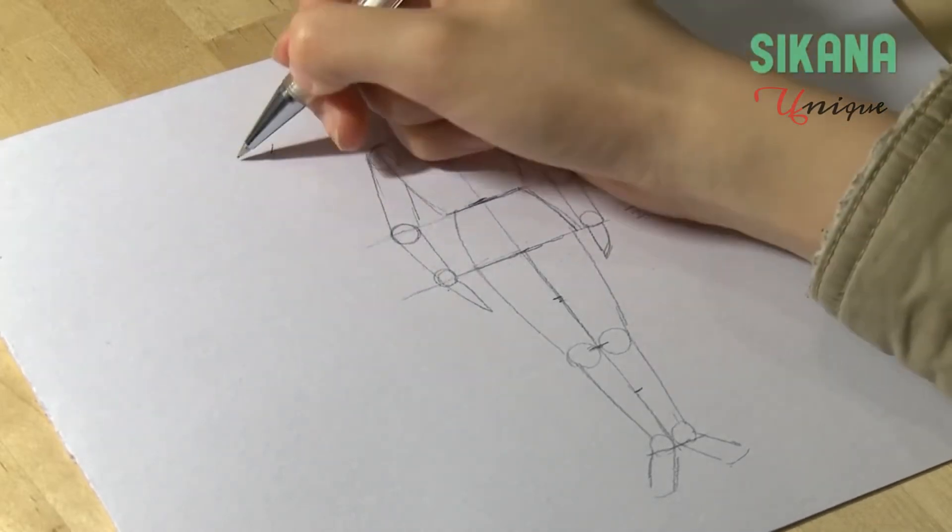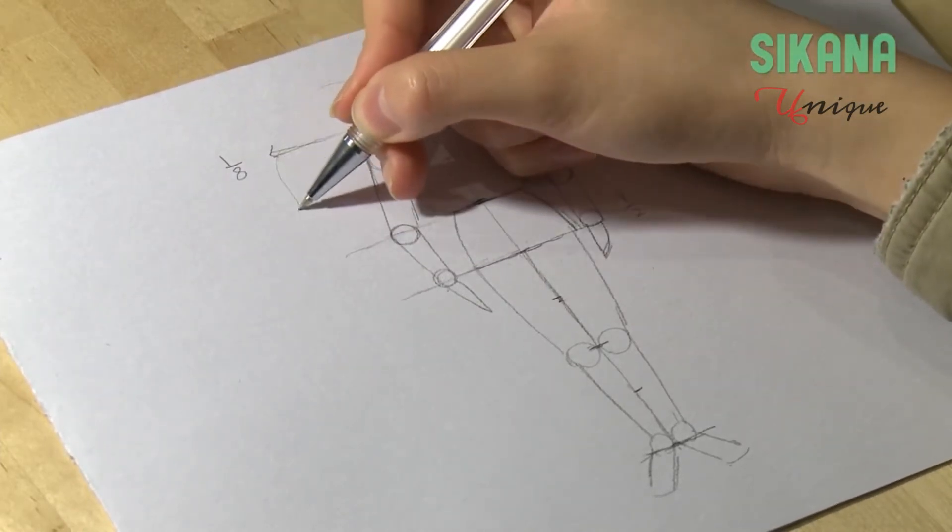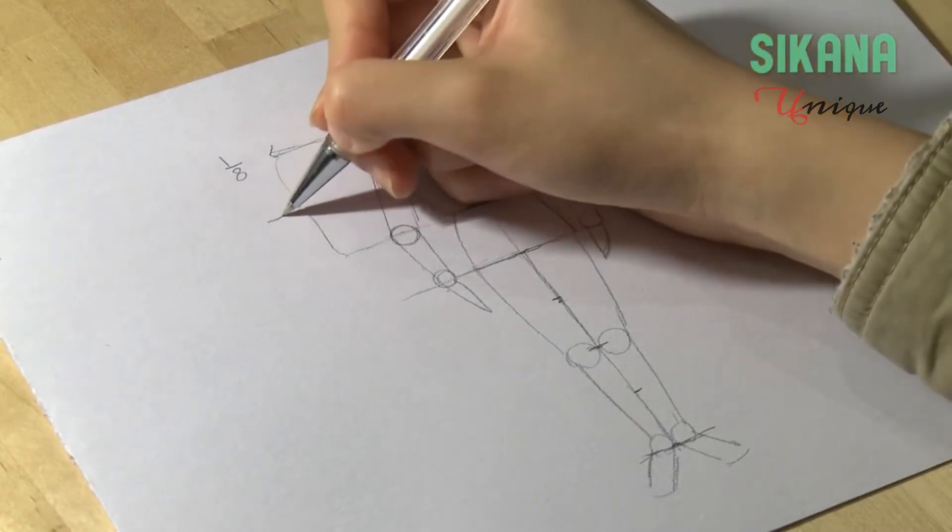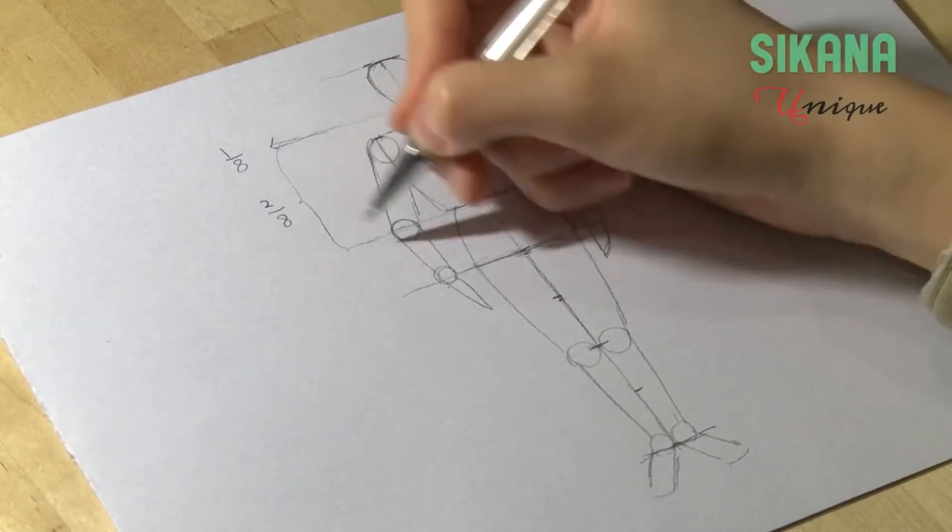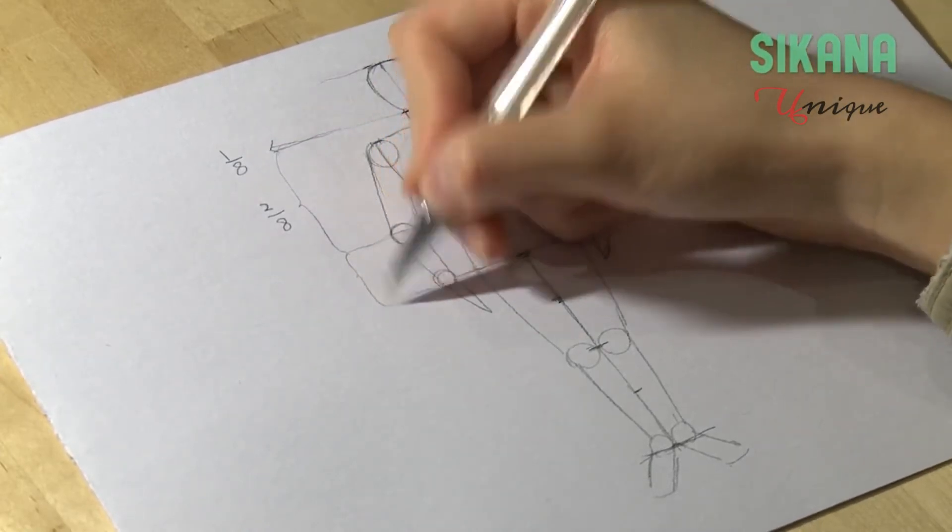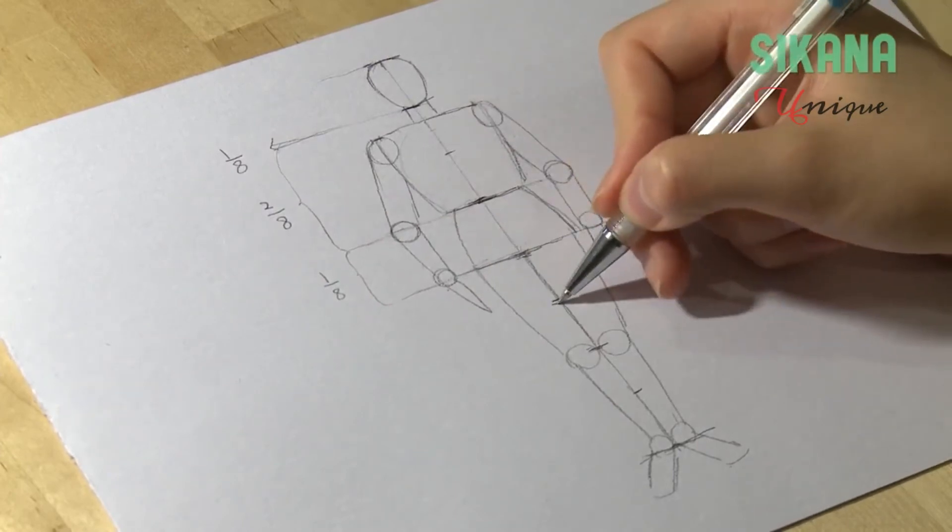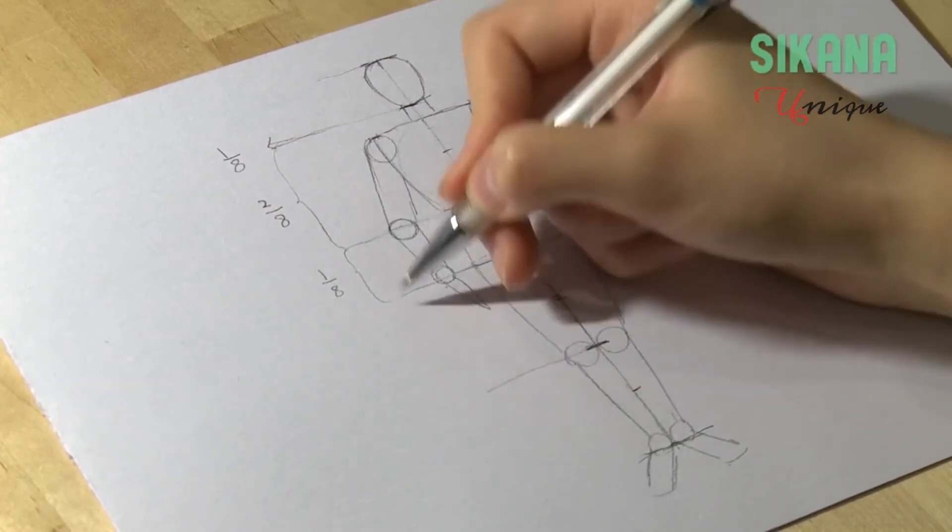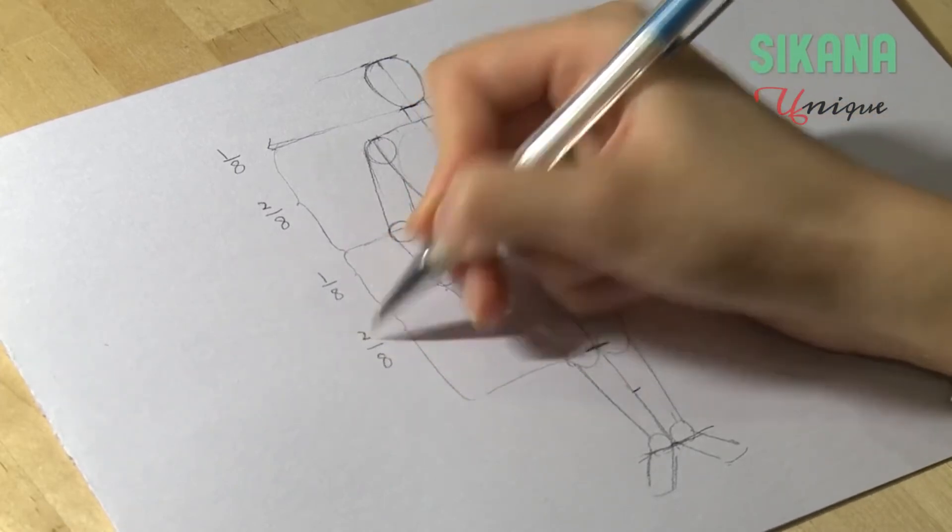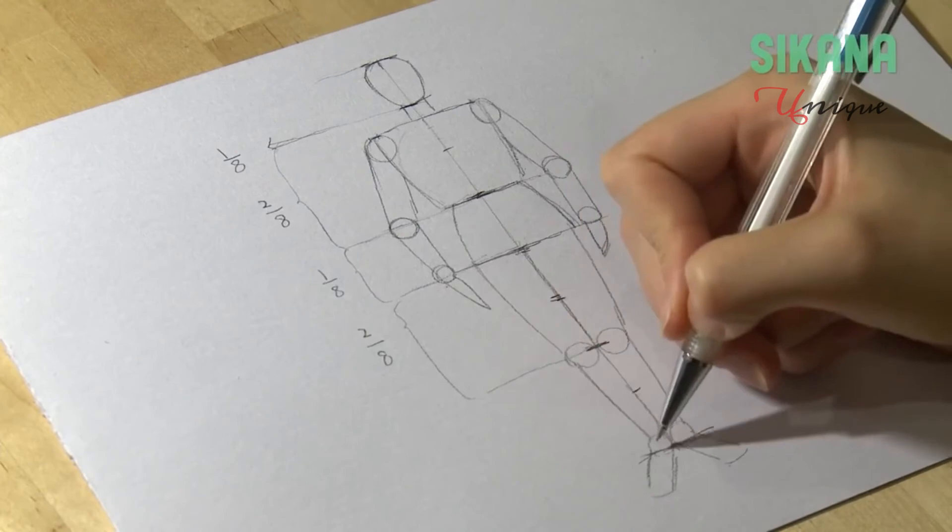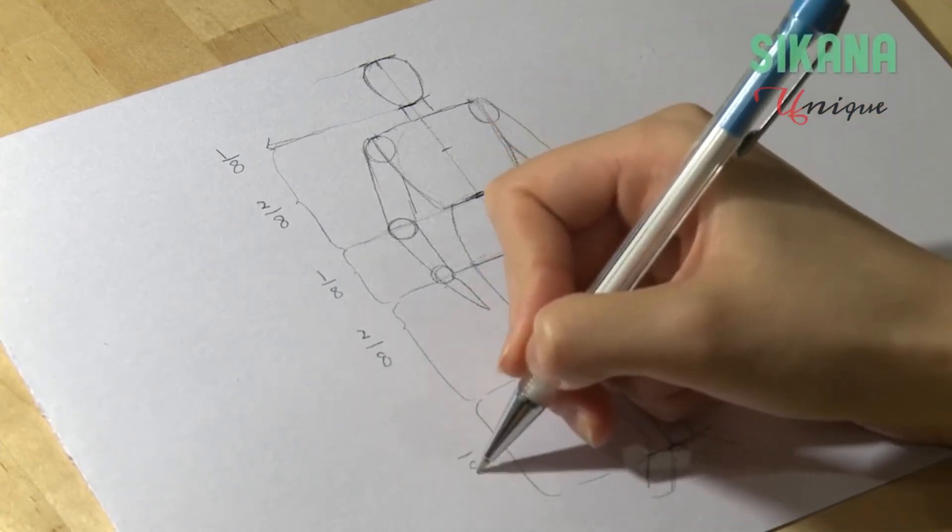To sum it up, the head takes one section, the neck and chest take two, the pelvis takes one, the thighs take two, and the lower legs take two sections.